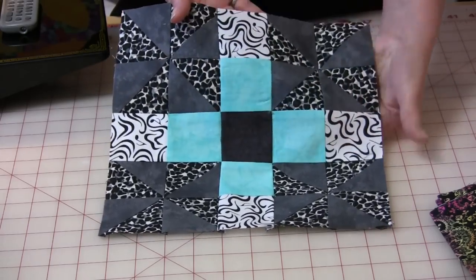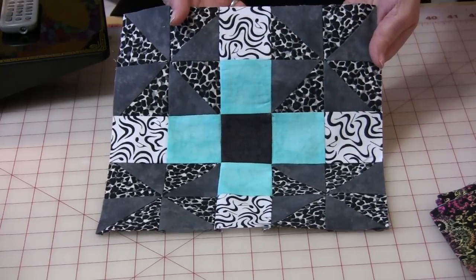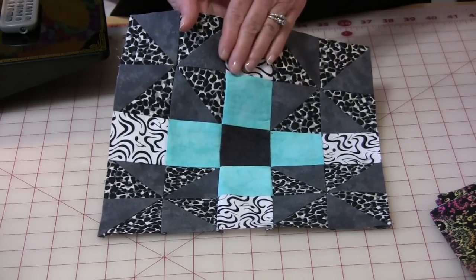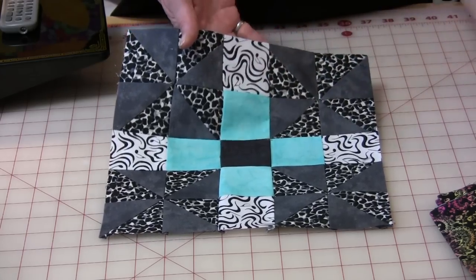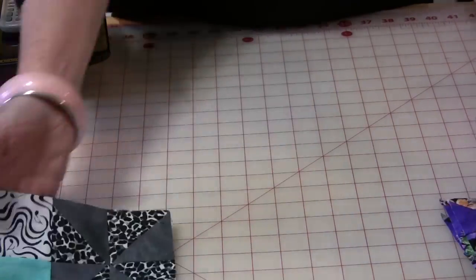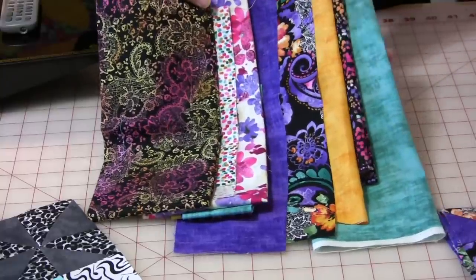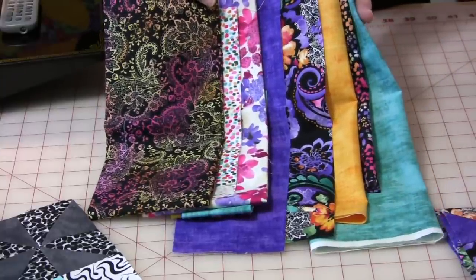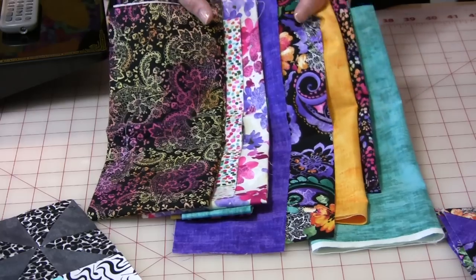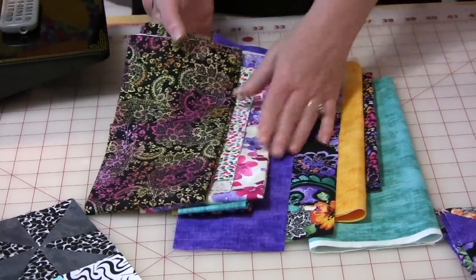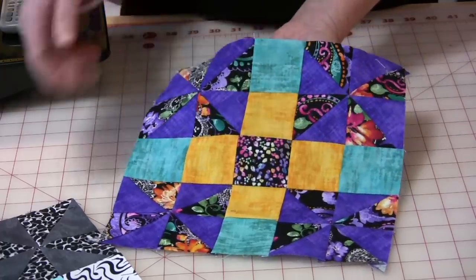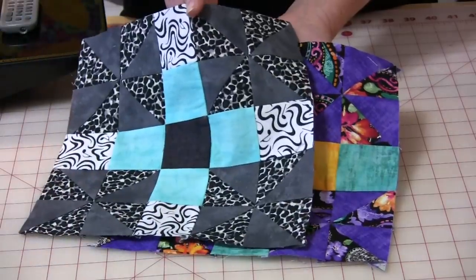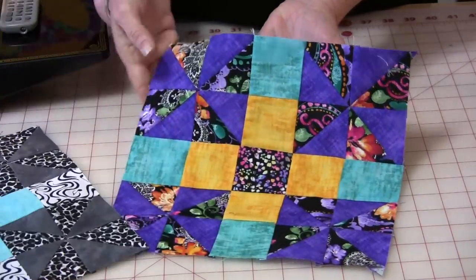Doesn't that blue just make that gray and black sparkle? Now I did do this another color variation, and let me show you the fabric line that I chose. I chose something totally different than the black and gray, and this is called Indian Summer and it is by Timeless Treasures.